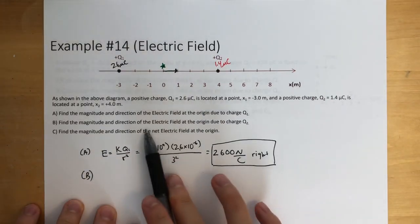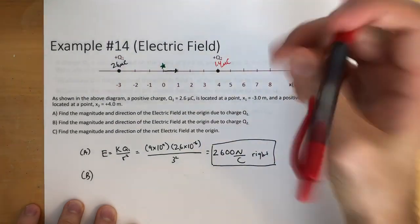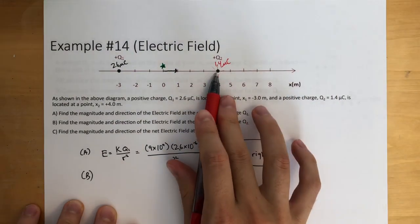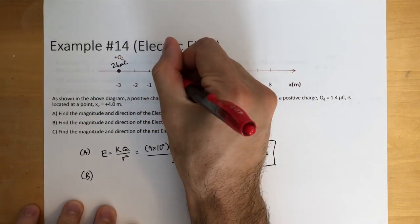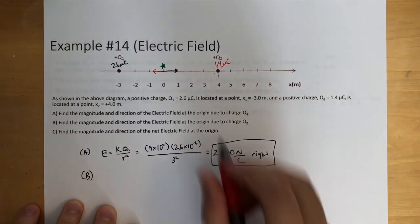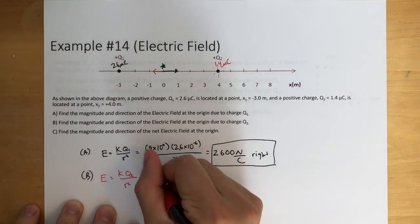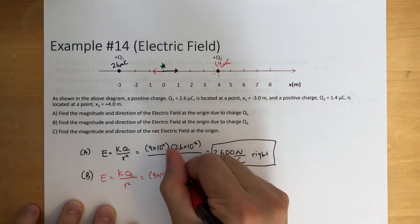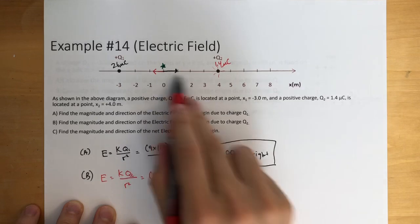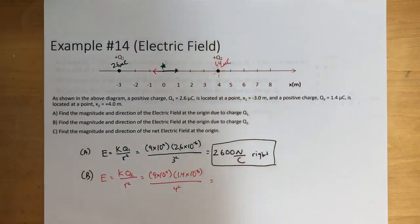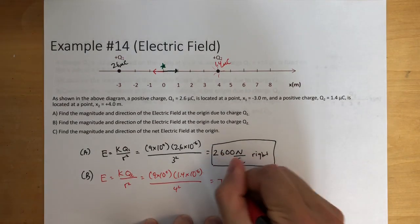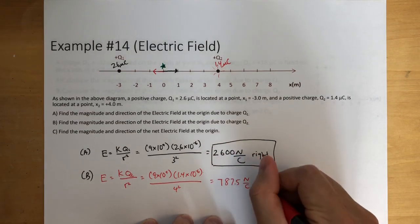Part B says find the magnitude of the electric field at the origin due to charge 2. Charge 2 has an electric field emitting outwards, but since it's on the same line, it's going to be emitting that electric field to the left. So E equals k times q2 over r squared: 9 times 10 to the 9th, times 1.4 times 10 to the negative 6, divided by 4 squared, giving us 787.5 newtons per coulomb to the left.